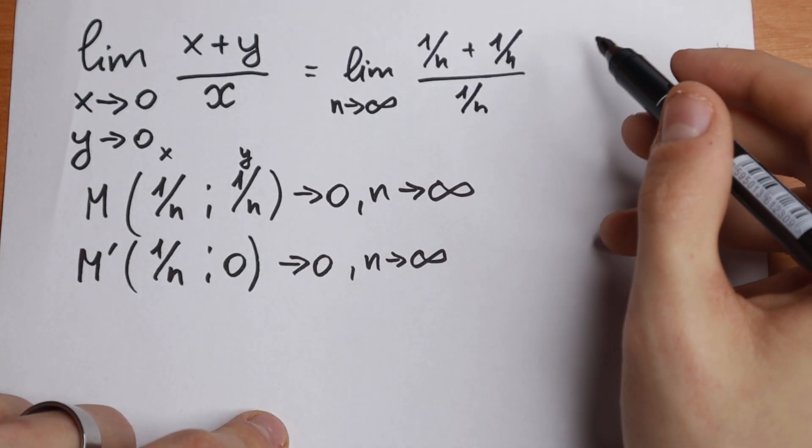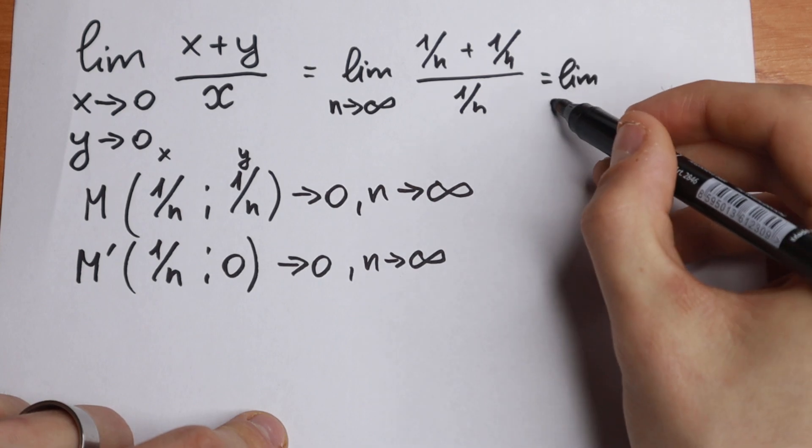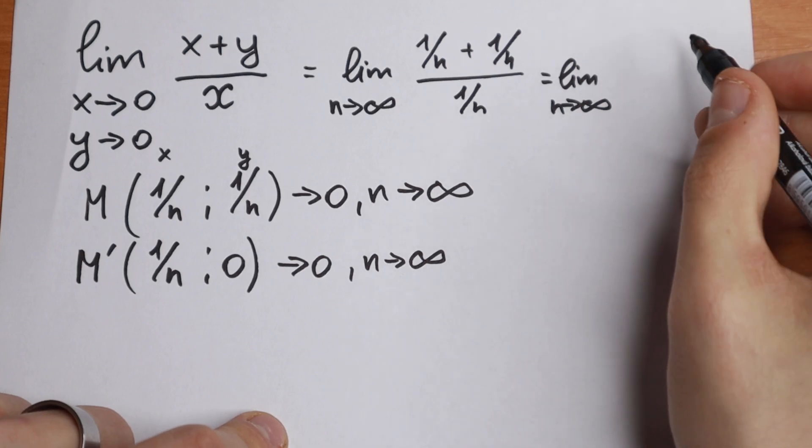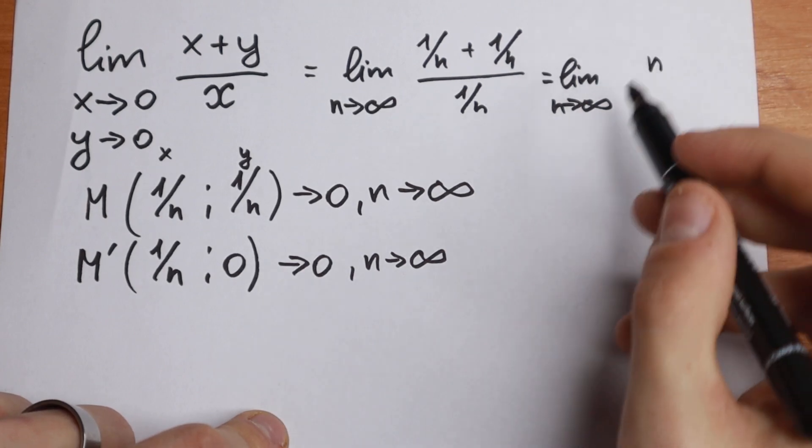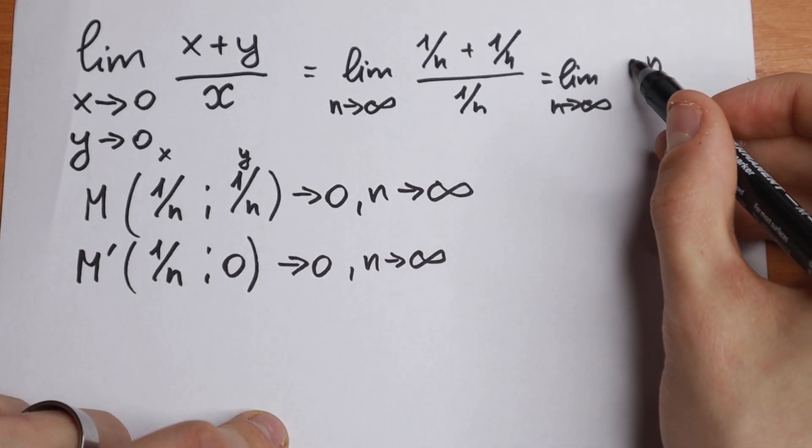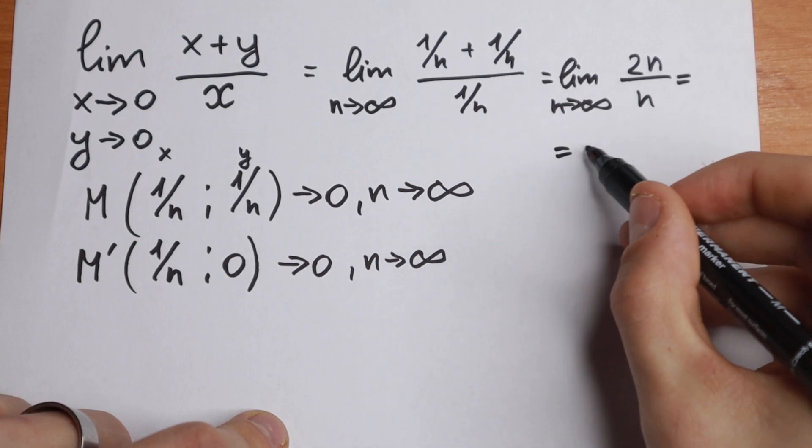How can we find this limit? Take a look. This limit is really good because we can find our common denominator in our numerator. We will have n and right here we will have n plus n and we will have 2n. So as a result we will have 2n over n and our limit will be equal to 2.